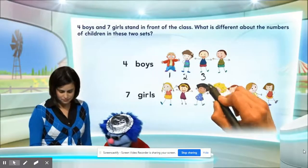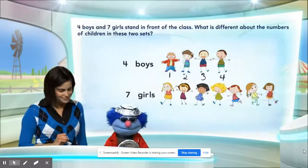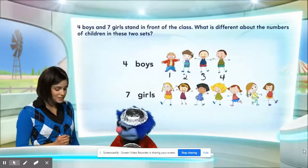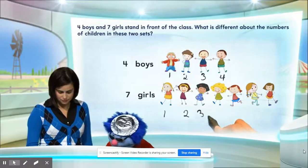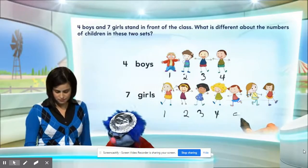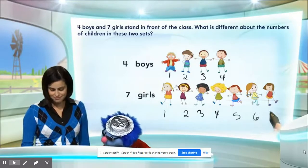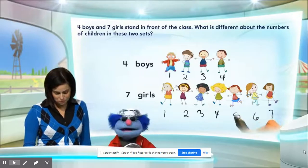One, two, three, four. Great. Four boys. Excellent. Let's go ahead and count the number of girls. One, two, three, four, five, six, seven. Seven girls!